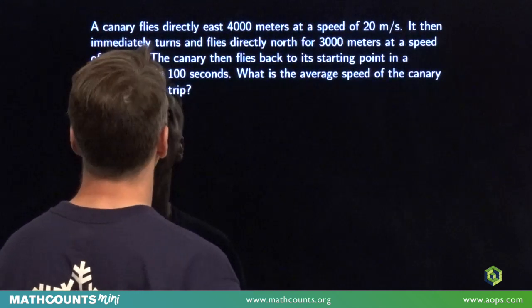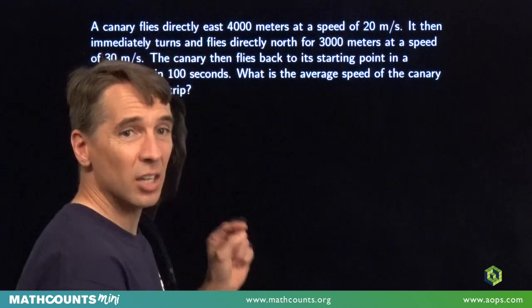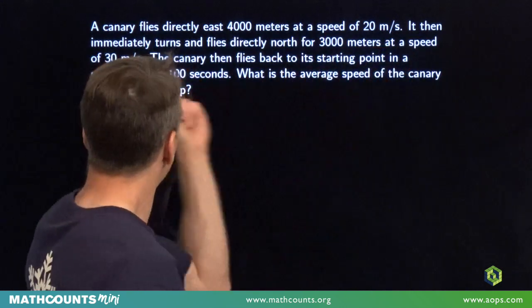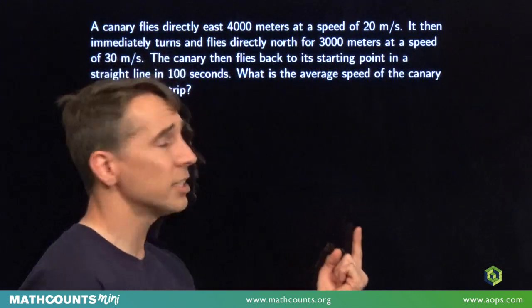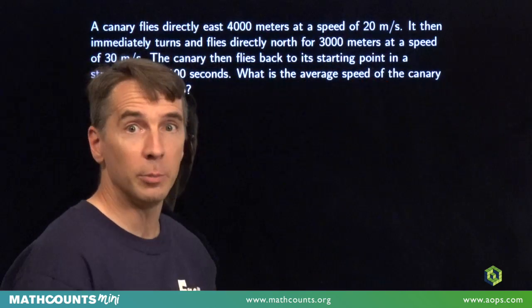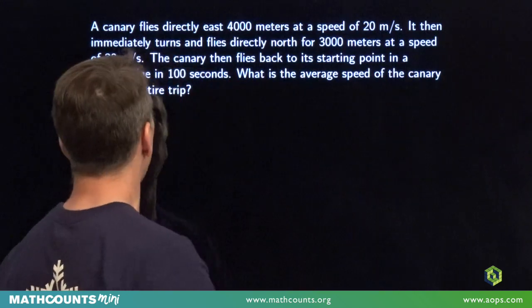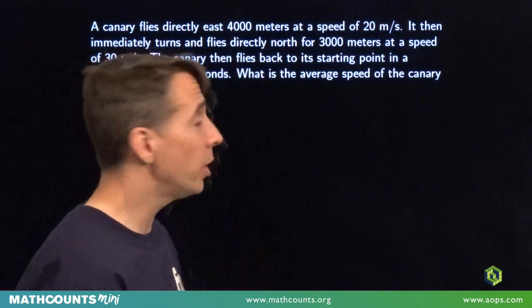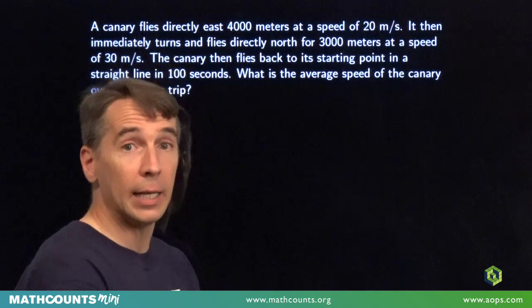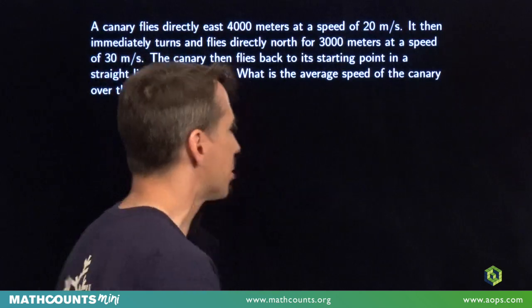More words. All right. A canary flies directly east 4,000 meters at a speed of 20 meters per second. It then immediately turns and flies directly north for 3,000 meters at a speed of 30 meters per second. Then the canary flies back to its starting point in a straight line in 100 seconds. And we need the average speed for the canary over the whole trip. A bunch of words describes a picture. Let's draw that picture.